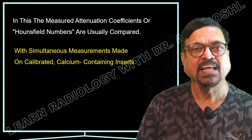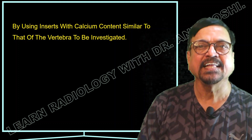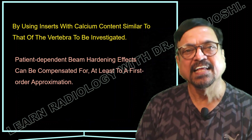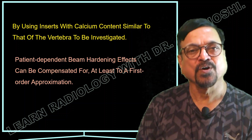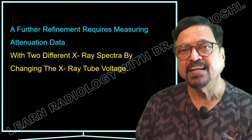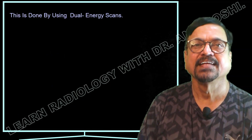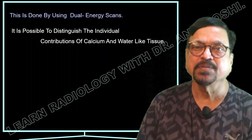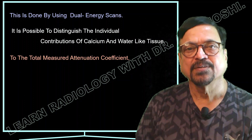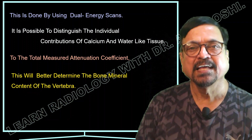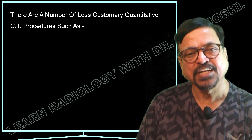This comparison is made with simultaneous measurement on calibrated calcium-containing inserts. By using inserts with calcium content similar to that of the vertebra being investigated, patient-dependent beam hardening effects can be compensated for, at least to a first-order approximation. A further refinement requires measuring attenuation data with two different X-ray spectra by changing the X-ray tube voltage — this is done using dual energy scans. It is then possible to distinguish the individual contributions of calcium and water-like tissues to the total measured attenuation coefficient, which better determines the bone mineral content of the vertebra.